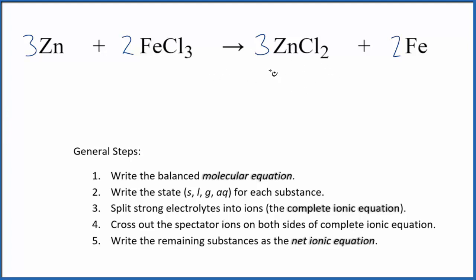If you need that done a little slower, there's a link at the end of this video. Now we can write the state for each substance. Both zinc and iron are solids, they're just metals. And then chloride is very soluble. So iron(III) chloride here and the zinc chloride here are both soluble, so we put aqueous.